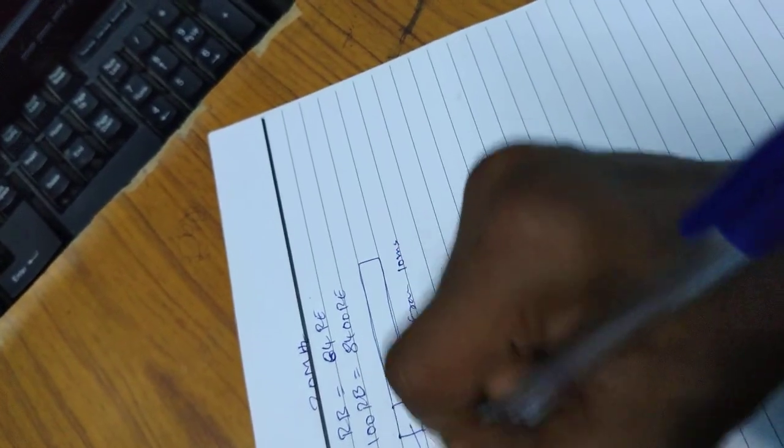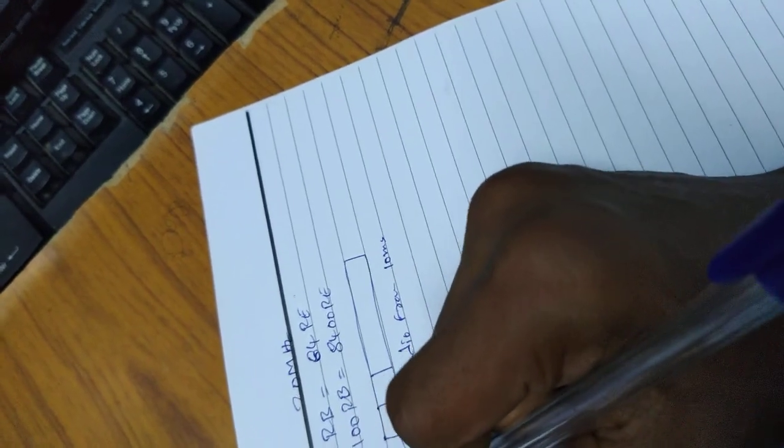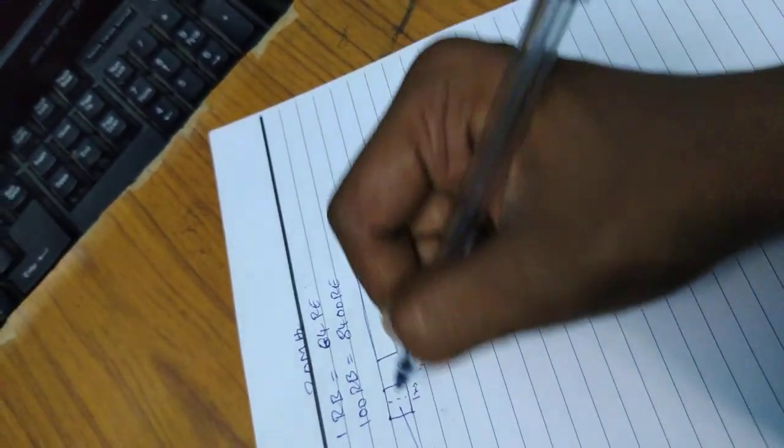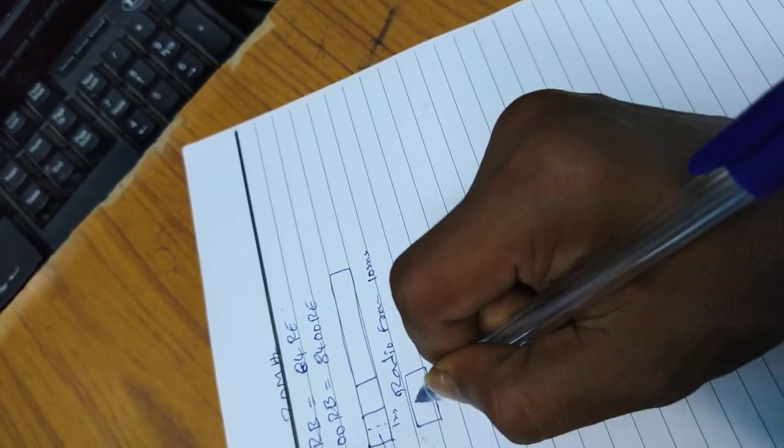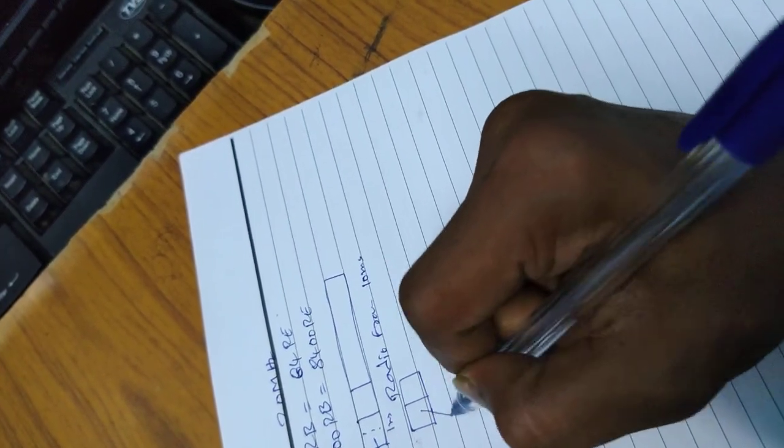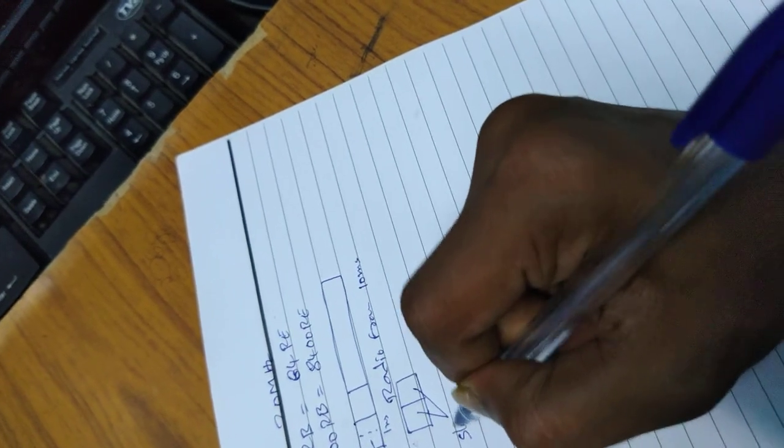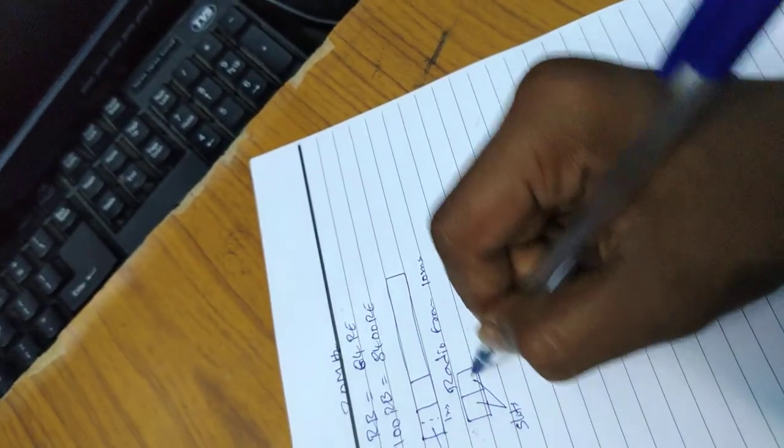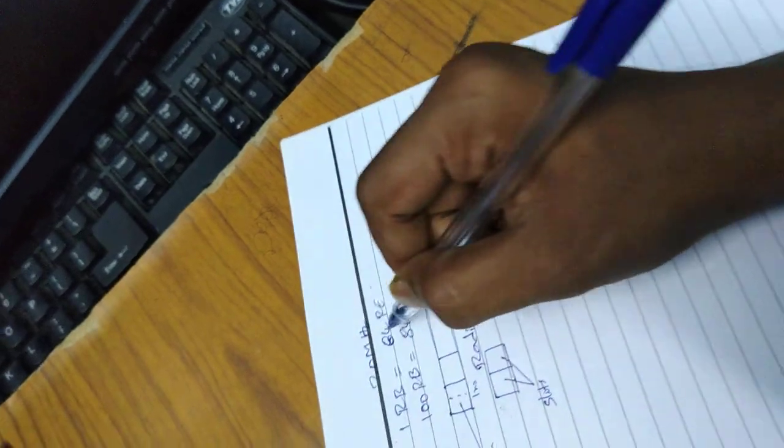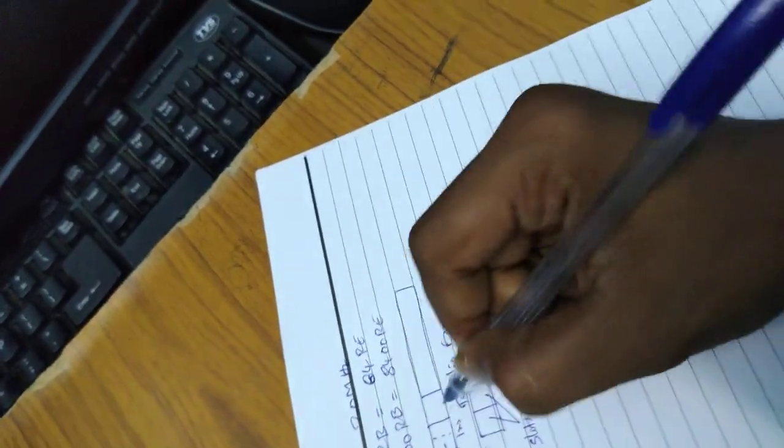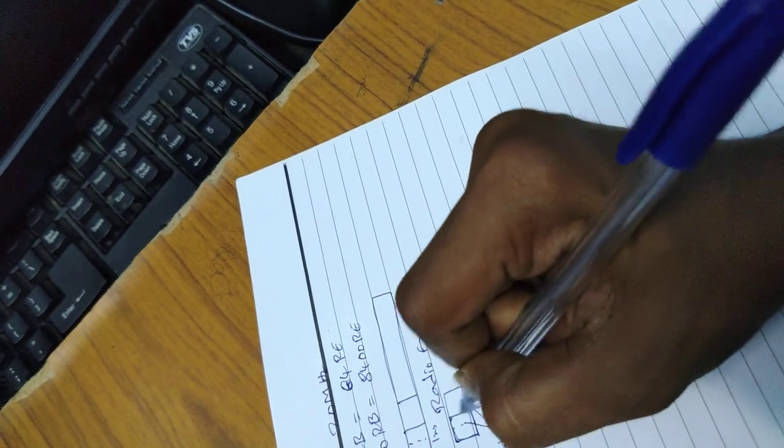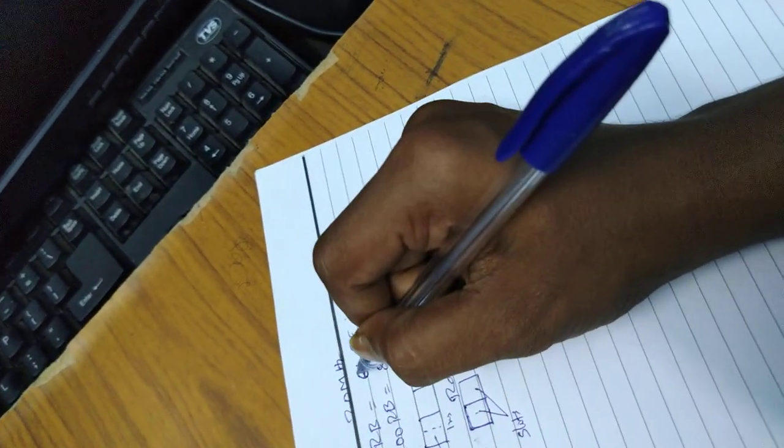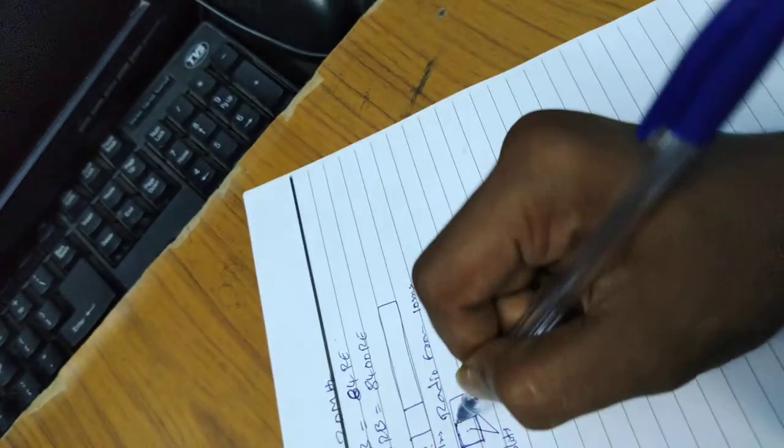This is one subframe. One subframe has two slots. We have 8,400 resource elements in one slot.